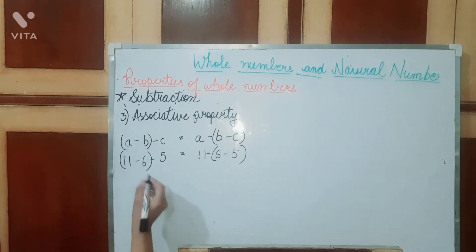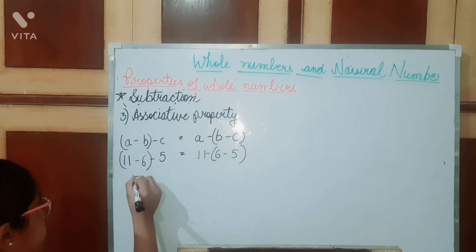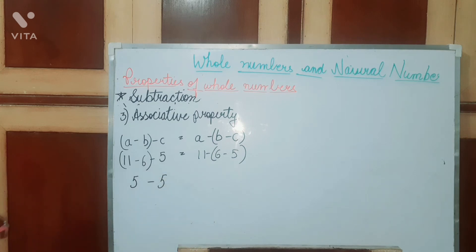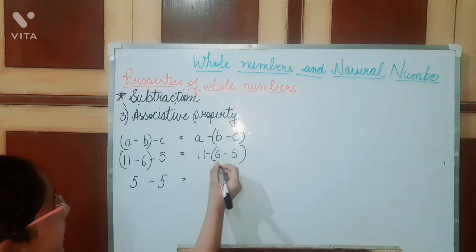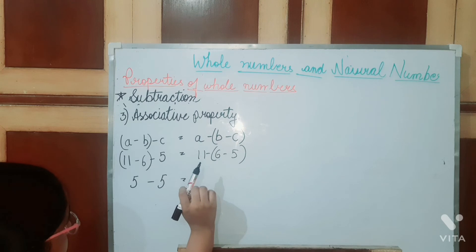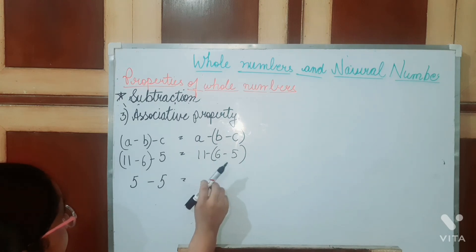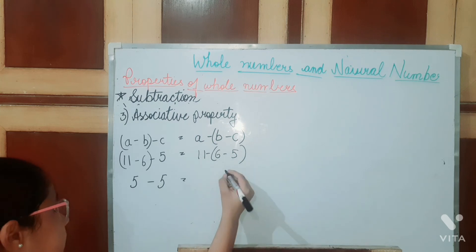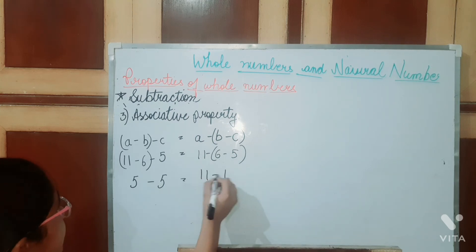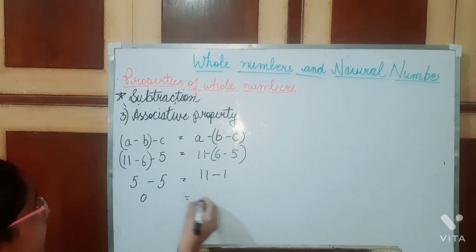Let's take numbers. First we solve the bracket: 11 minus 6 is 5, then 5 minus 5 gives 0. On the other side, we have 6 minus 1 first, then 11 minus that result — giving 6 minus 1 equals 1, and 11 minus 1 equals 10. So 5 minus 5 is 0 but the other side gives 10.